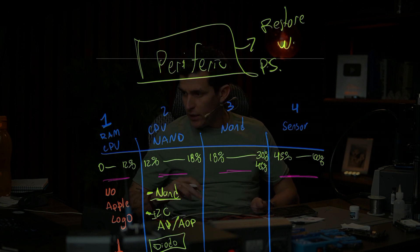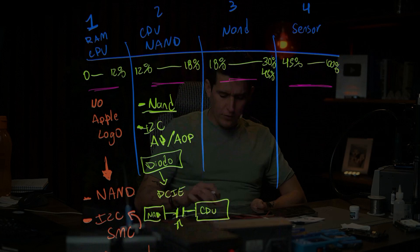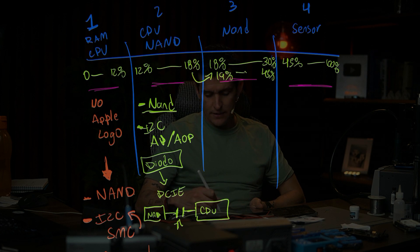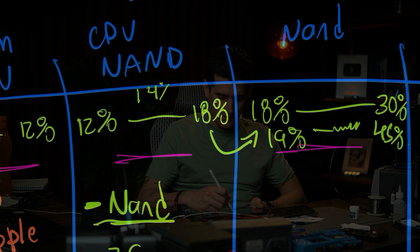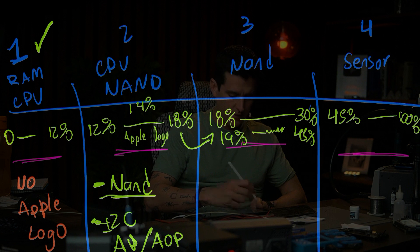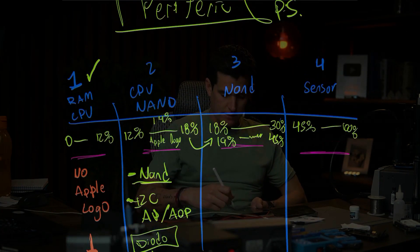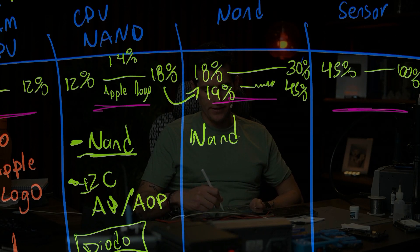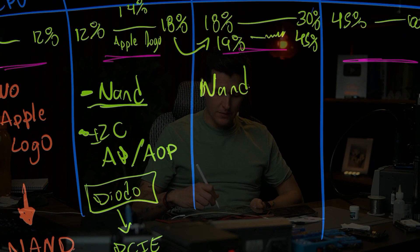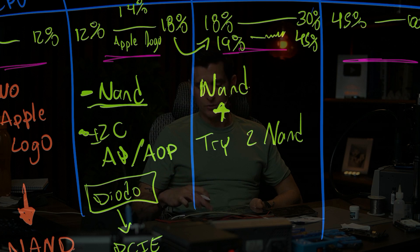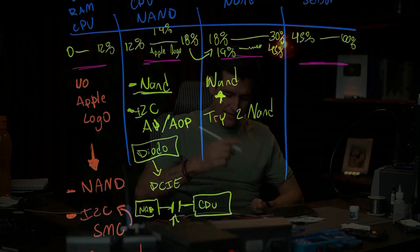Another important thing: restore using a power supply, not your battery. Also, if the phone gets to 90% and starts restoring — on the iPhone 16 or 14 you're going to have an Apple logo — if steps 1 and 2 are fine, you can still have a NAND issue in this area. Always try two NANDs.